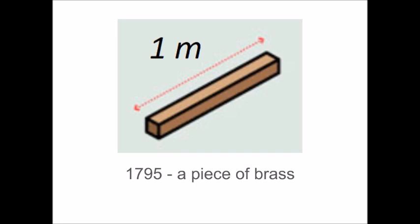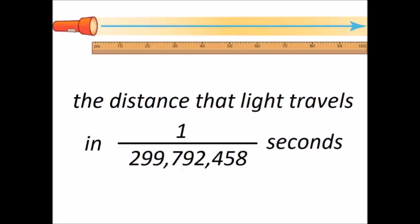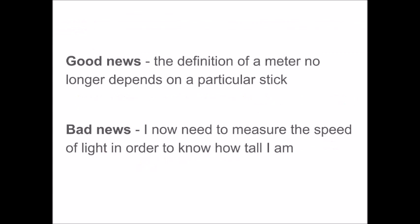In the 20th century, the definition of a meter was changed to the distance that light travels in just about 1/300,000,000th of a second — approximately 1/299,792,458 of a second. The good news is that now the definition of the meter does not depend on a particular stick, which would be disconcerting. If some vandal cut the brass meter stick in half overnight, you would wake up and be twice as tall, even though your real height didn't change.